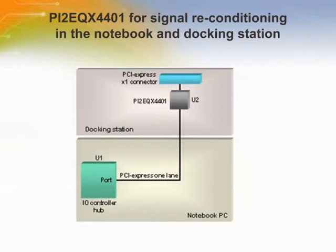Here is an example of using the PI2-EQX4401 for signal reconditioning in a notebook and docking station. The PCI Express signal at the PCI Express X1 connector in the docking station becomes weak and fails the compliance test after traveling through a long trace between U1 and the connector. The PI2-EQX4401 in the docking station reconditions the signal from U1 to meet the PCI Express compliance test at the X1 connector.